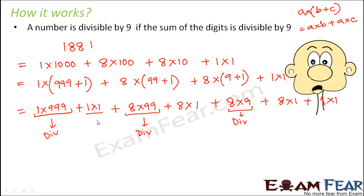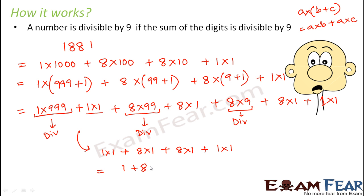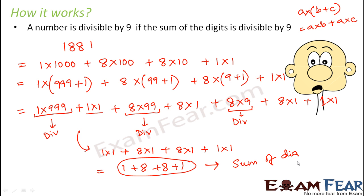What are we left with? We are left with 1×1 + 8×1 + 8×1 + 1×1, which is basically 1+8+8+1 — that is nothing but the sum of the digits. So we are only unsure about the sum of the digits. If the sum of the digits is divisible by 9, the remaining part is anyway divisible by 9, because it contains multiples of 9, 99, 999, 9999 and so on. Therefore we check the sum of the digits.